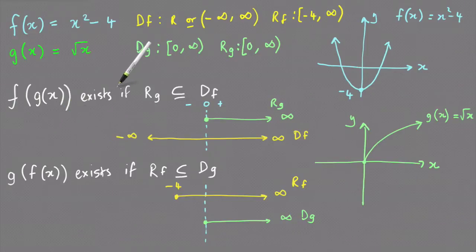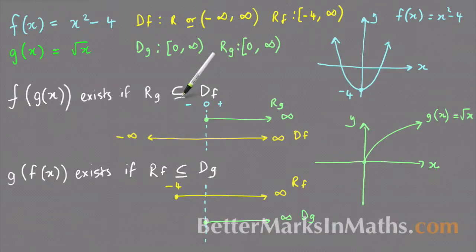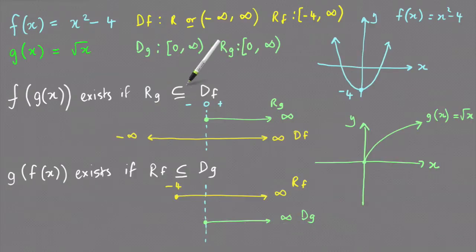It exists if the range of the g function is contained in or is equal to the domain of the f function. This is the subset symbol and this line underneath means or equal to, just like on a greater than or less than sign. So it exists if the range of g is contained within the domain of f or is equal to the domain of f.